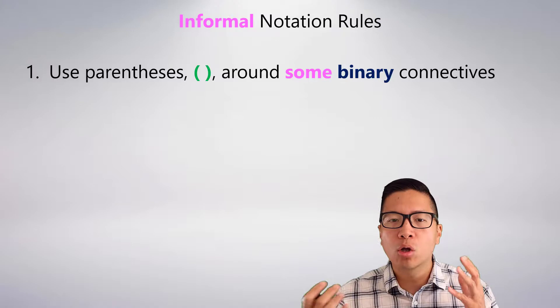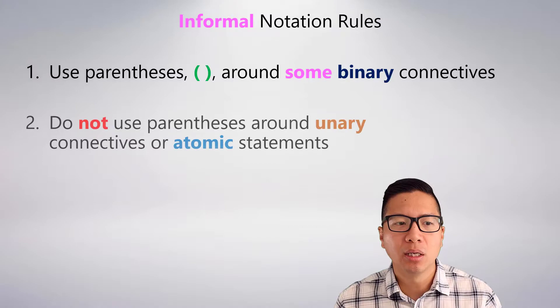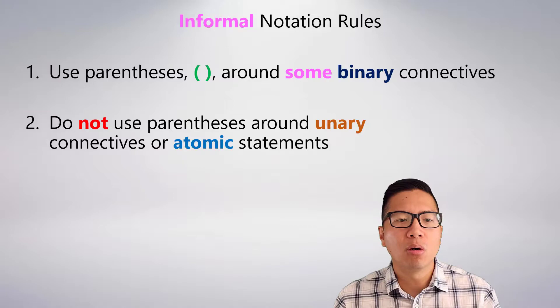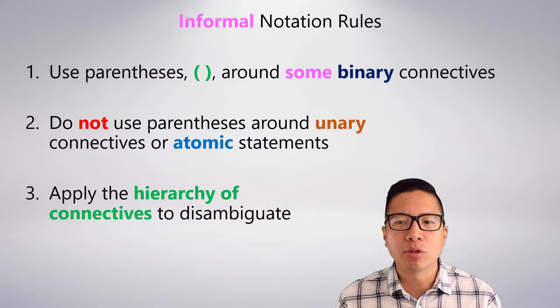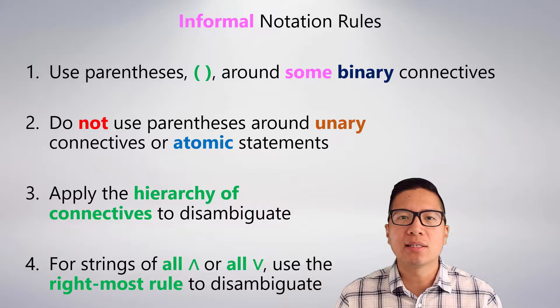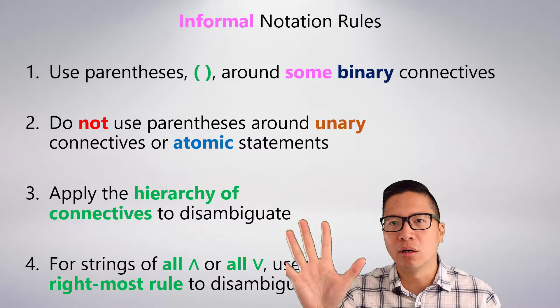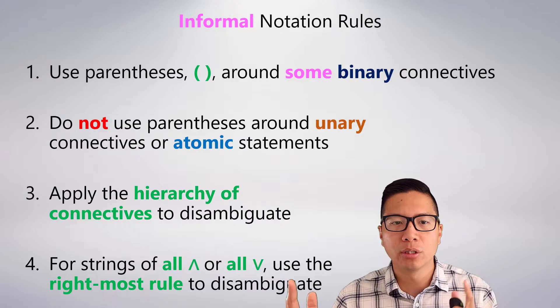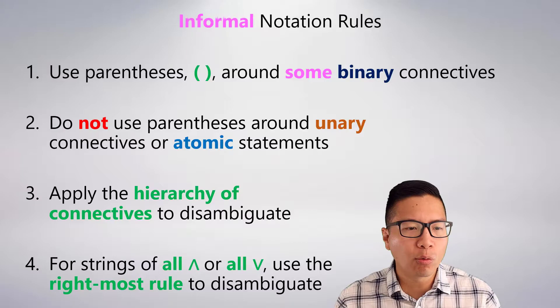Instead of using parentheses around all of your binary connectives, you just use parentheses around some of them. You still never use brackets around a unary connective or atomic sentence like P on its own. But we have to worry about potential ambiguity. To resolve it, we adopt two conventions: first, we apply a hierarchy of connectives to disambiguate; and second, if you have a string of all ANDs in a row or all ORs in a row — not a mixture — we use the rightmost rule to disambiguate.